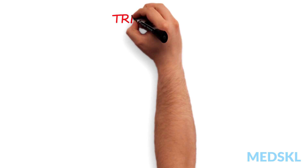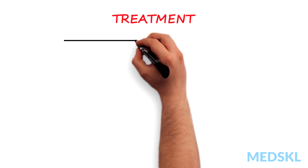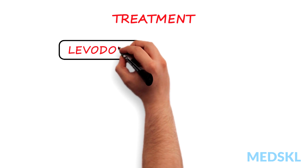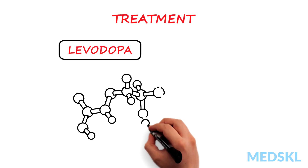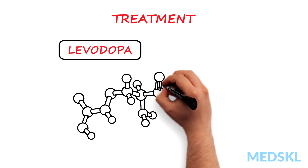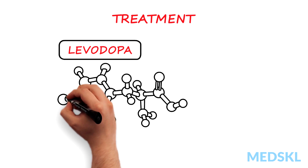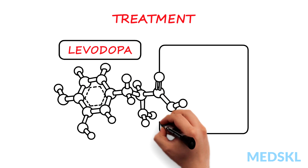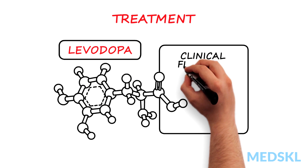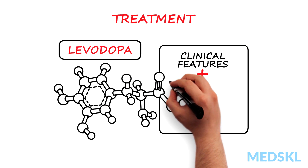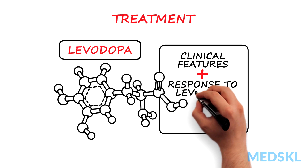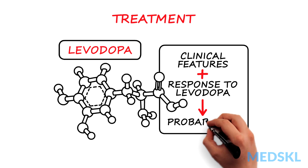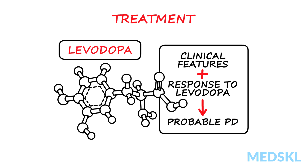PD is treated with levodopa, which is a precursor of dopamine, the neurotransmitter that is deficient in PD. An excellent response to levodopa in a patient with asymmetric tremor-predominant Parkinsonism is supportive of the diagnosis of PD.